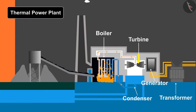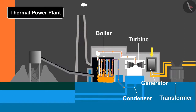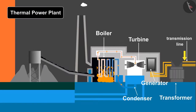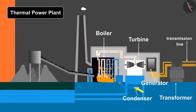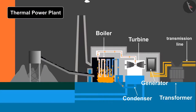The other end of the turbine is connected to the generator, which converts mechanical energy into electrical energy. This electrical energy is then transmitted via transmission lines to reach different grids. The steam gets condensed with the help of the condenser and is sent back for reuse. This is the cheapest and easiest way to generate electricity because water and coal are available in abundance, but it is one of the major causes of air pollution.